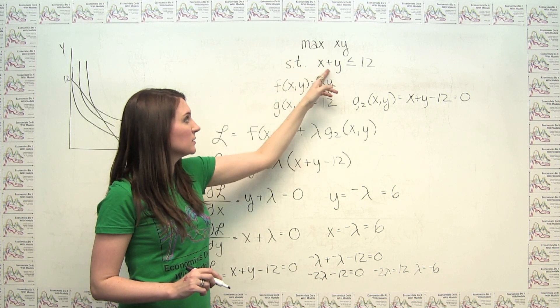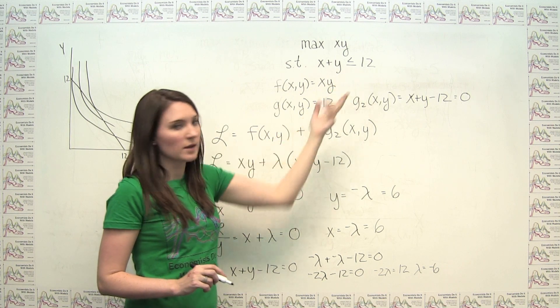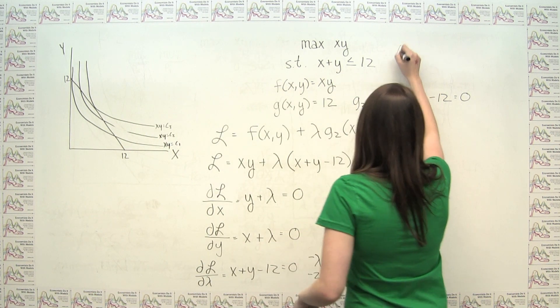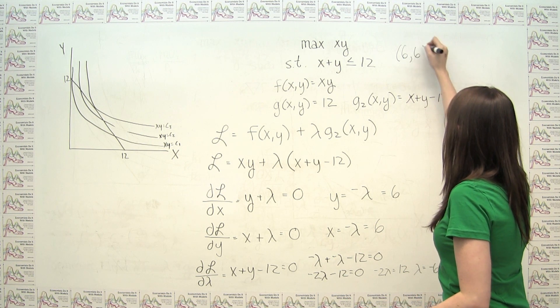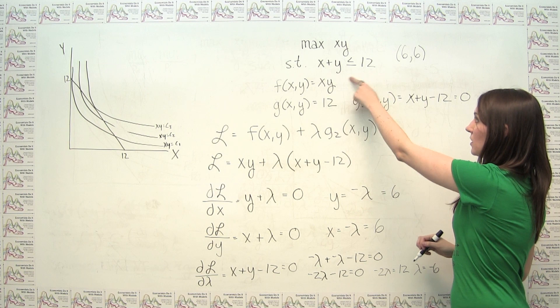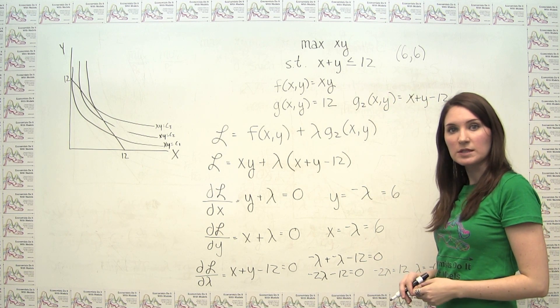Our maximum x, y, such that x plus y is less than or equal to 12, is in fact the point 6 comma 6. So by doing this, we found the solution to our original constraint optimization problem.